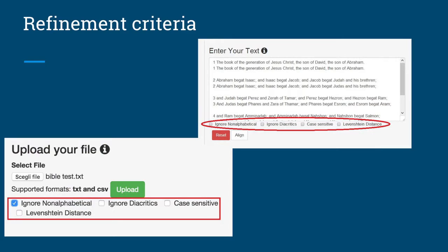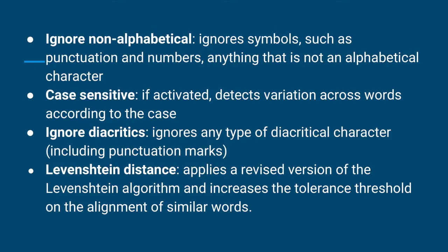The refinement criteria include: ignore non-alphabetical — ignore symbols and everything that is not alphabetical, including punctuation and numbers. Case-sensitive matters in some languages like English where we have small and capital letters, but not in Arabic or Hebrew. Ignore diacritics is also available. These options are language-dependent — for Greek, Latin, Arabic, Hebrew, and Persian, we have specific options. The next step is to make language-dependent option sets for each language.